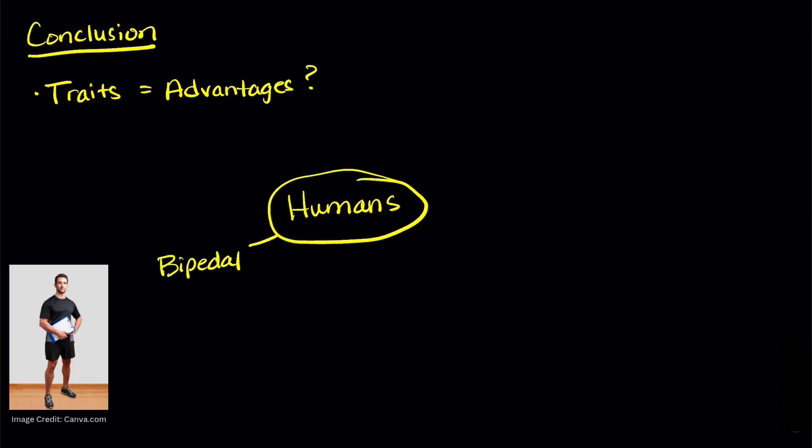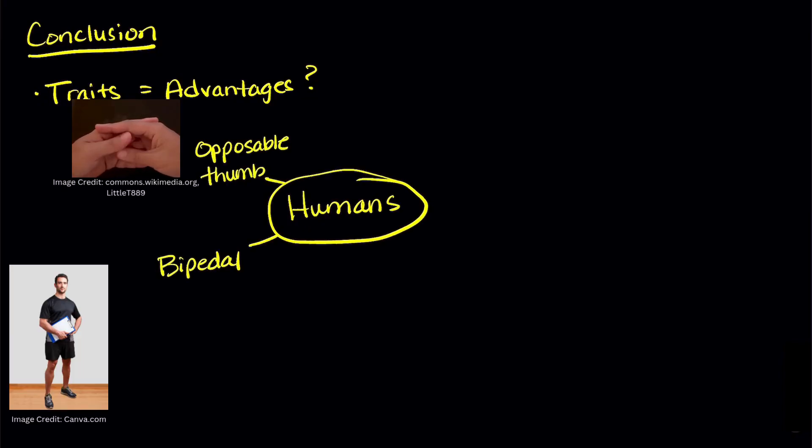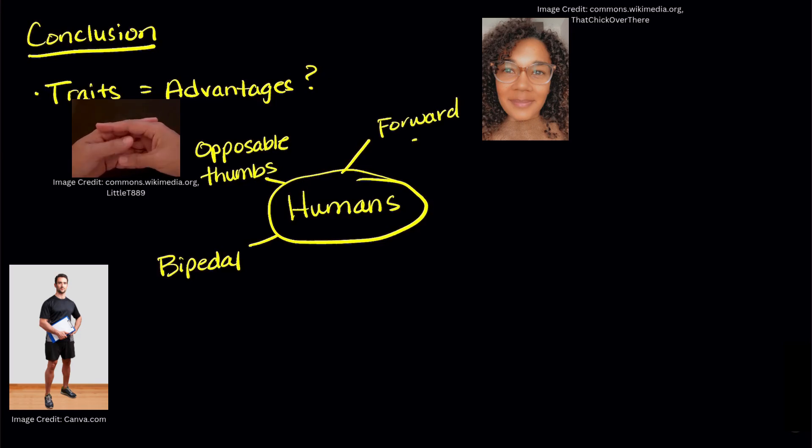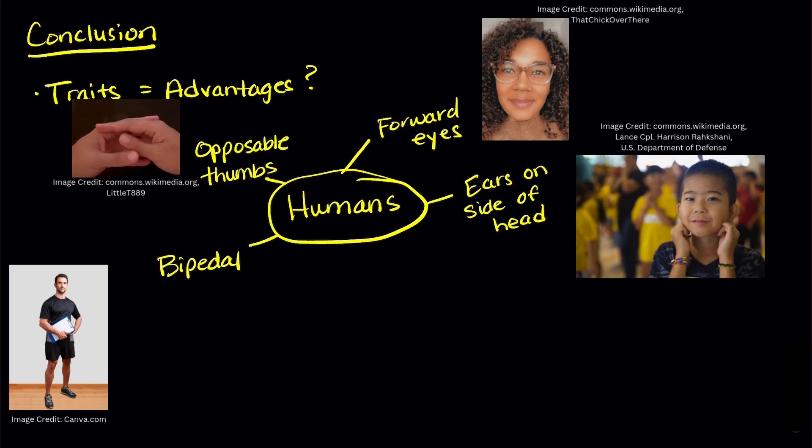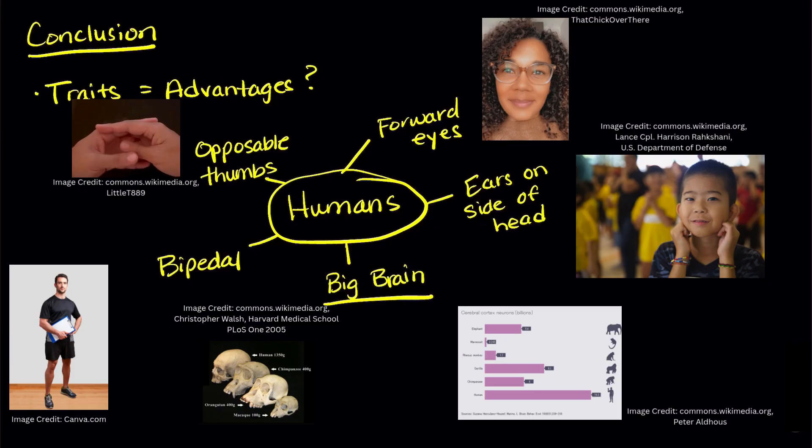So where does all this leave us? Conclusion. This study allows us to look at the traits of animals and see how they might have evolved. This same strategy we can use to look at ourselves. What advantages do we get from our traits? We're bipedal. We have opposable thumbs. We have eyes that face forward and ears that are on each side of our head. And of course, there's our big brain. What challenges have humans faced where these traits were beneficial? It's certainly something to think about.